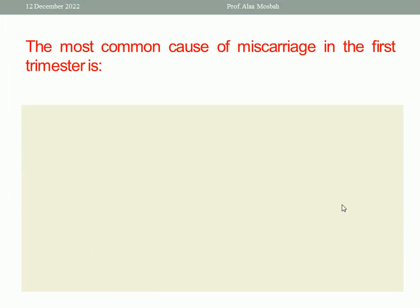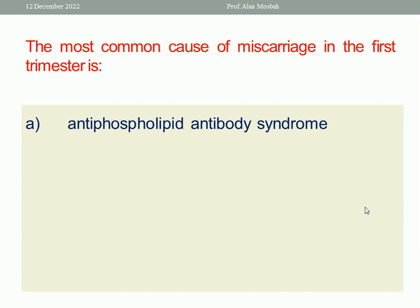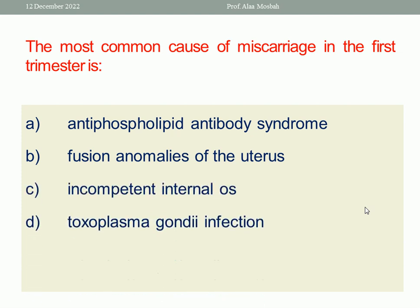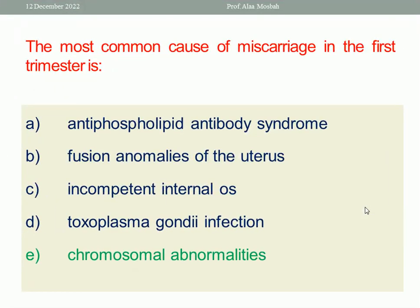The most common cause of miscarriage in the first trimester is chromosomal abnormalities of the fetus.